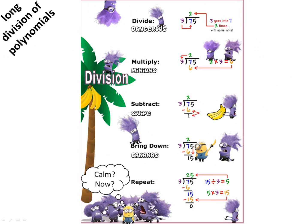It's very simple: you divide — say 3 into 7 goes 2 — then you multiply, so 2 threes are 6, you subtract, 7 minus 6 is 1, then you bring down 5, and then you repeat the whole process. You say 3 into 15, and we go through the whole process again.